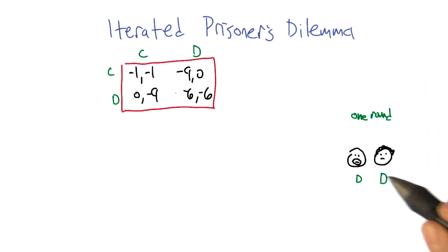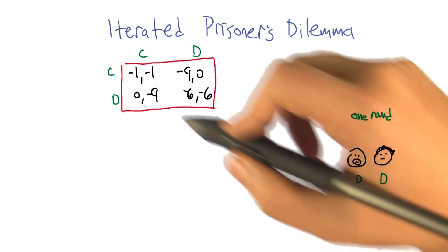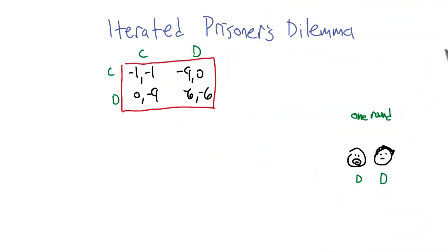Remember, it was about these two criminals, Smoove and Curly, and they were deciding whether to cooperate or defect against each other after they've been arrested. Right. And they always defect.